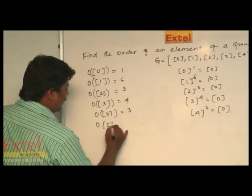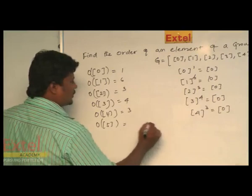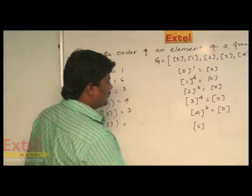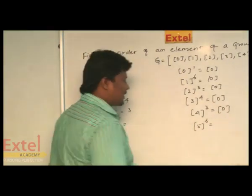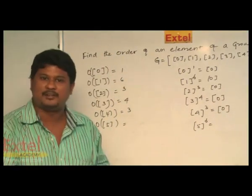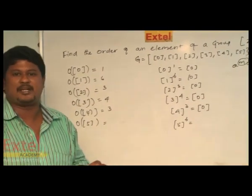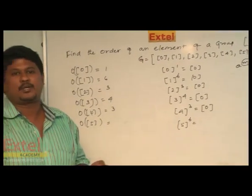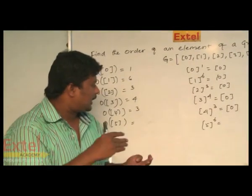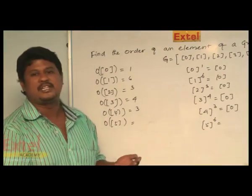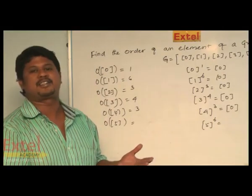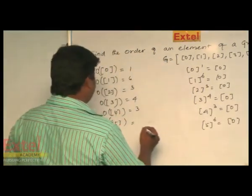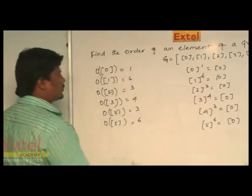Finally, order of element 5: 5 power 1 gives 5, 5 power 2 gives 10 with remainder, 5 power 3 gives 15 with remainder, 5 power 4 gives 20 with remainder, 5 power 5 gives 25 with remainder, and 5 power 6 gives 30, which has no remainder when divided by 6. Therefore, we get identity element 0, so the order of 5 is 6.